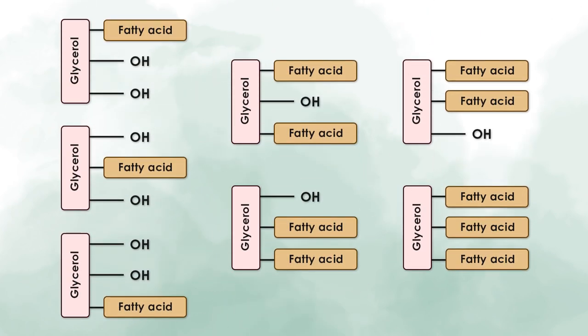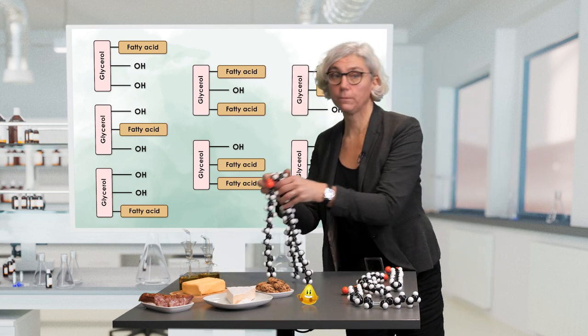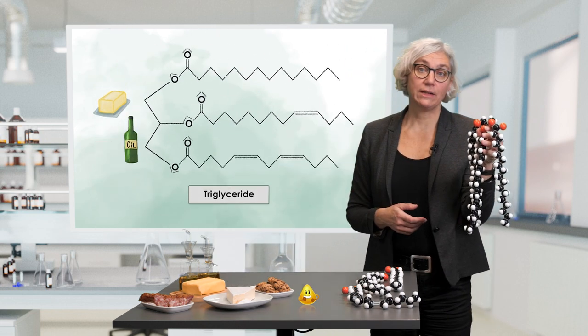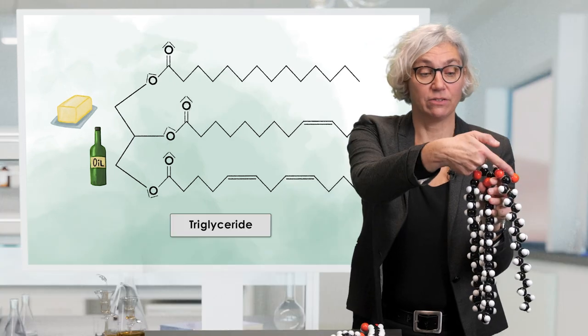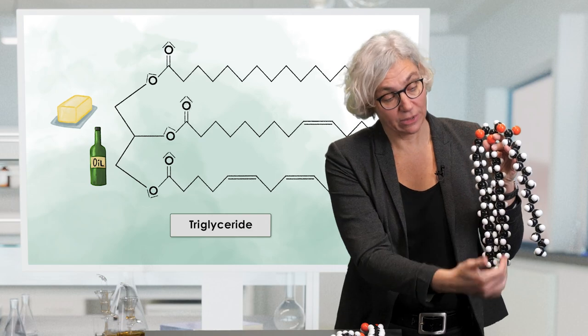Usually, in edible fats and oils, we find complex mixtures of what we call mono, di or triglycerides. This is how we imagine a triglyceride, with a glycerol backbone here on top and the three long fatty acids attached to the glycerol.